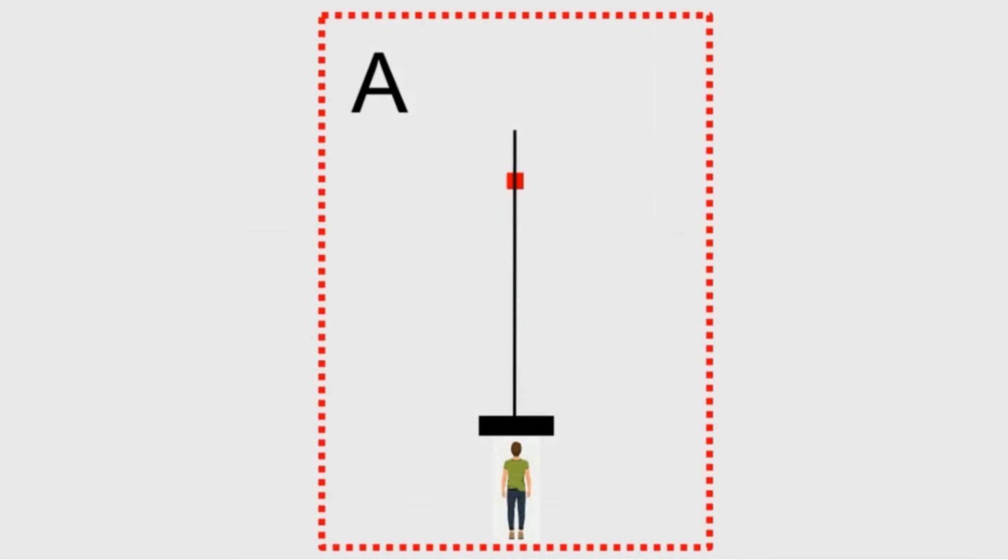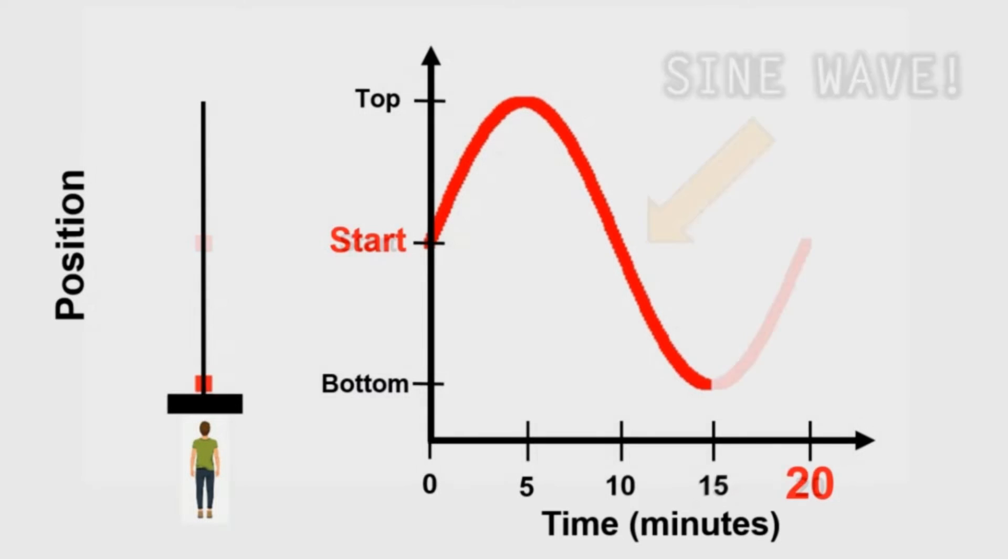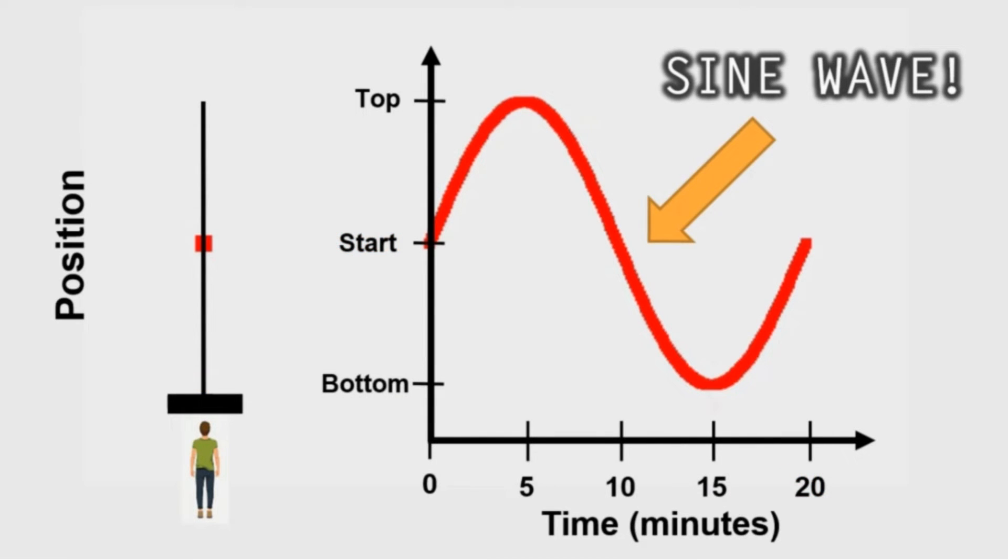Now let's plot the red square's movement when the giant wheel starts rotating on our time versus position graph, for this vertical motion. From the start position, in 5 minutes, you'll reach the top of the giant wheel. In 10 minutes, you're back down to the start position. In 15, you're at the bottom of the giant wheel. Finally, in 20 minutes, you're back again at the start position. So here we go. This red curve is a sine wave.